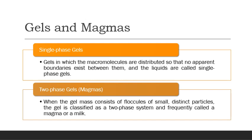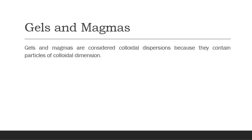In two-phase gels, the gel mass consists of floccules of small distinct particles, and the gel is classified as a two-phase gel, frequently called a magma or a milk. If there is clear segregation between the dispersing phase and dispersing medium, and we observe floccules or small particles, this shows two phases — hence called two-phase gels or magmas. Gels and magmas are considered colloidal dispersions containing particles of colloidal dimension, with particle size in the range of 1 nanometer to 1 micrometer.